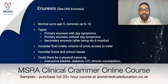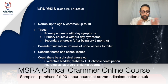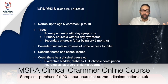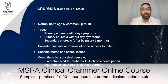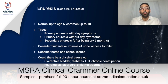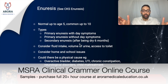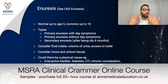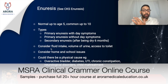Let's focus on enuresis or bedwetting, which comes up frequently in questions. Remember, enuresis is normal up to age five and common up to age ten, so action isn't always needed. Consider the type: primary enuresis is when someone has never been dry before — with or without daytime symptoms. Secondary enuresis is when someone has had at least six months of dryness and then returns to bedwetting; this may indicate a physical cause and may need investigations.